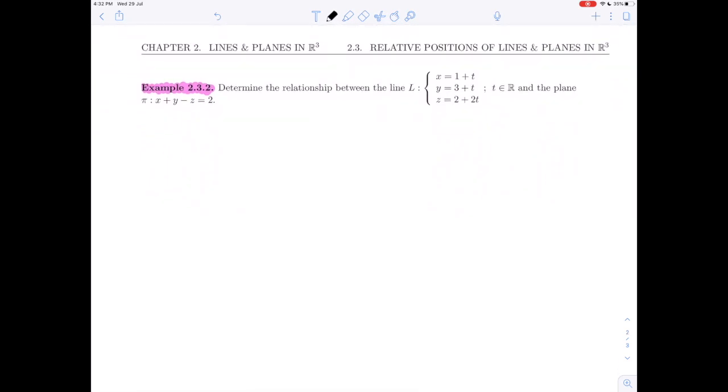We're given the line x equals 1 plus t, y is 3 plus t, and z is 2 plus 2t, which means that we can see a point on the line 1, 3, 2. And we can identify a direction vector, the coefficients of t: 1, 1, 2. And we see the plane pi that we're given: x plus y minus z equals 2.